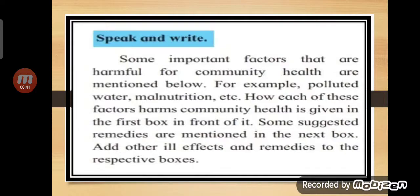Now, speak and write. Some important factors that are harmful for community health are mentioned below. For example, polluted water — that means the water is not clean — and malnutrition, which means you are not getting proper food. To fill the stomach is not the important part; are you getting all the vitamins, minerals, carbohydrates, protein, and fats that are required for the body? If you don't get that, it is called malnutrition. How each of these factors harms community health is given in the first box, and some suggested remedies are in the next box. You can add more ill effects and remedies to the respective boxes.